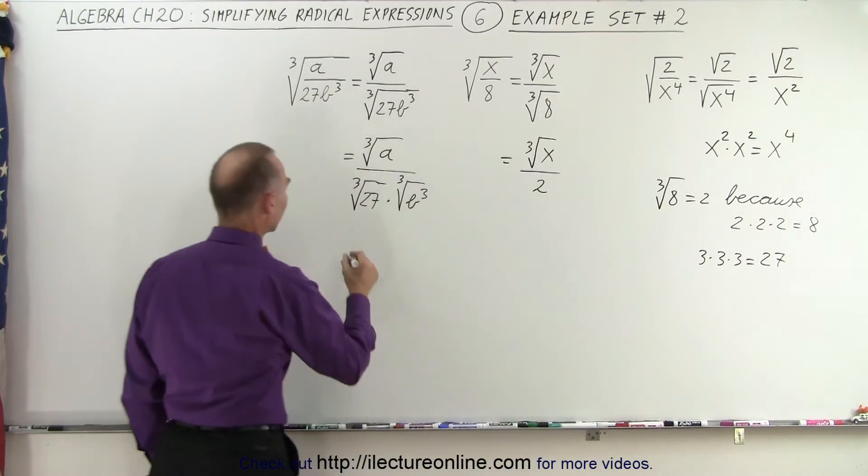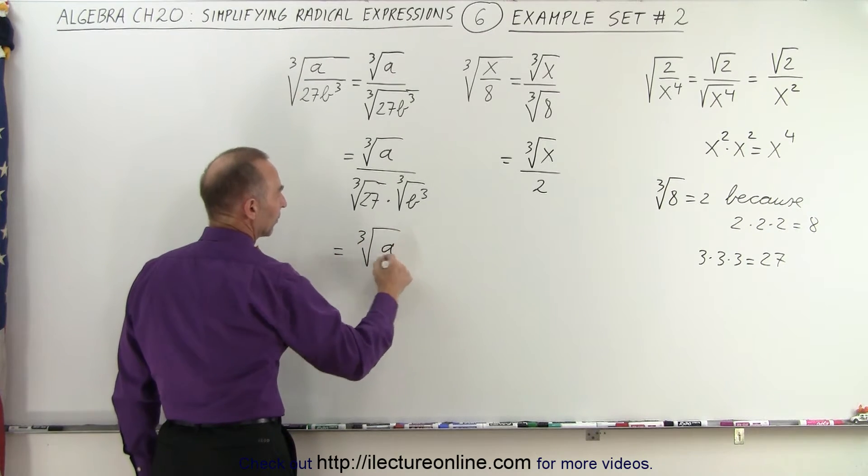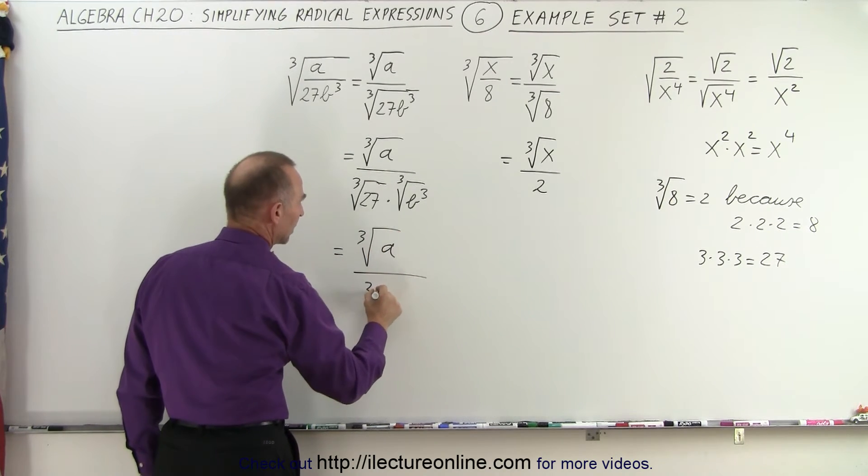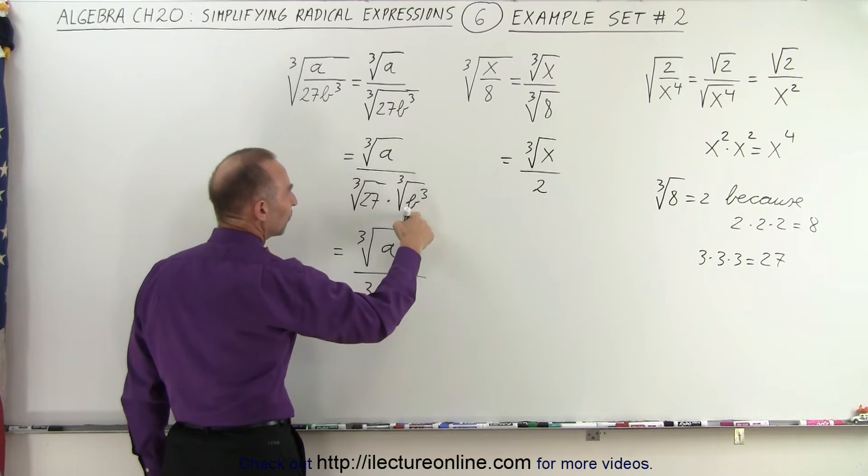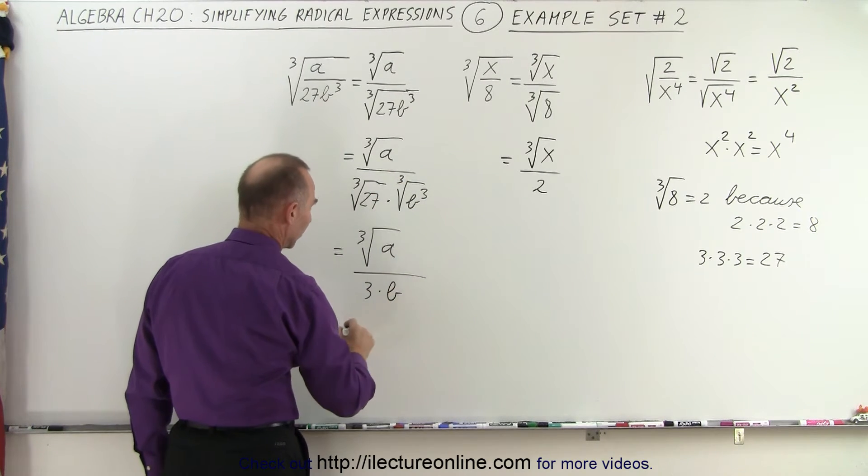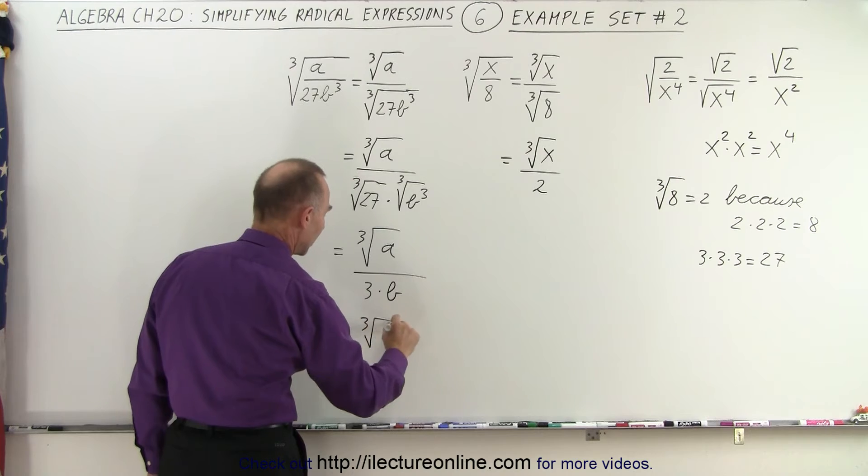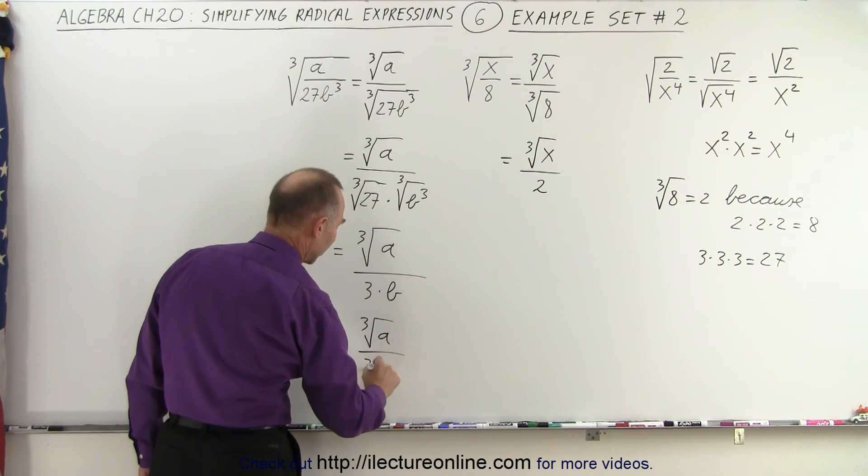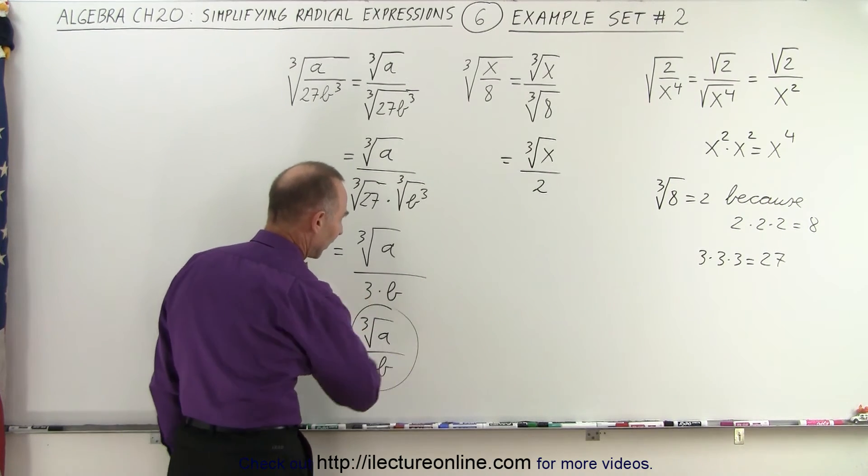So this can be written as the cube root of a divided by 3 times the cube root of b cubed. And the cube root of b cubed is simply b, so this can be written as the cube root of a divided by 3b. And that's the final answer.